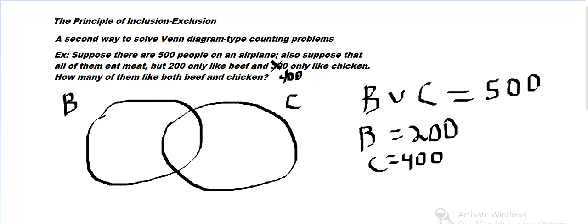So if we add B and C together, that's going to be 600 total on the inside. But there's only 500 on the inside, so that means we over-counted. B and C each contain this intersection. So if we add B and then add C, we're going to be adding this intersection twice.